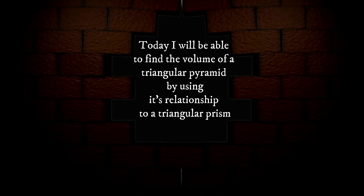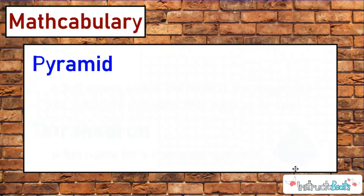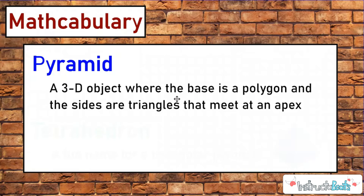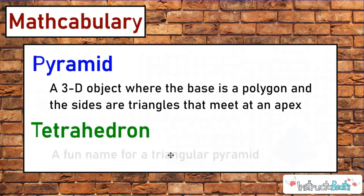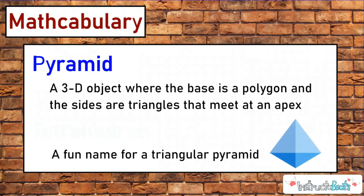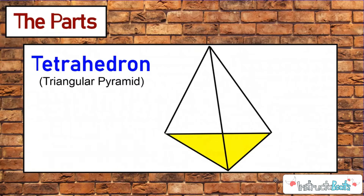Let's dive into our mathcabulary. Our mathcabulary today is a pyramid. A pyramid is a 3D object where the base is a polygon and the sides are triangles that meet at an apex. Today we're looking at a very special type of pyramid — a tetrahedron — which is just a fun name for a triangular pyramid. Both of those terms are interchangeable.